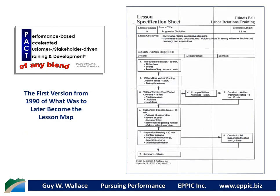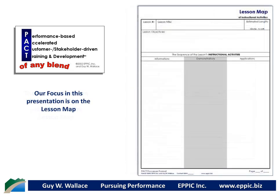The original format for what's now known as the lesson map was originally called the lesson specification sheet. The three columns in the center portion included lecture, demonstration, and exercise. I changed it after this first project because that was not robust to other delivery methods beyond instructor-led training. The lesson map evolved to look like this, where the body includes three columns: one for information, next demonstration, and lastly application or application exercises.